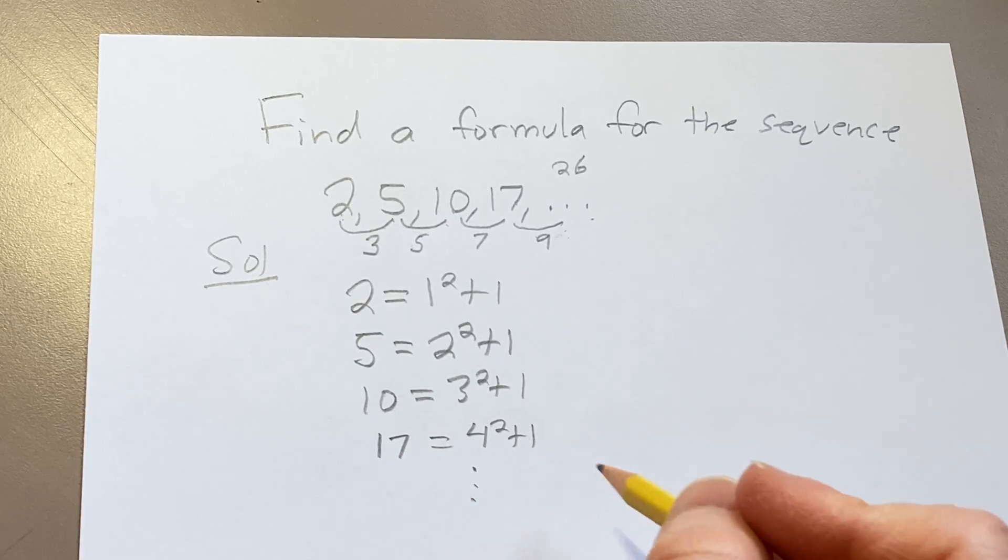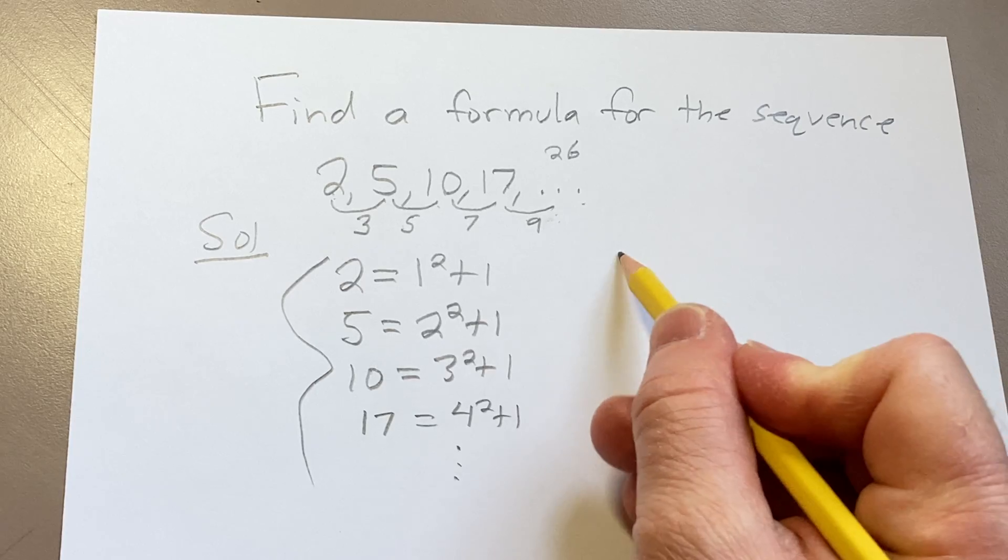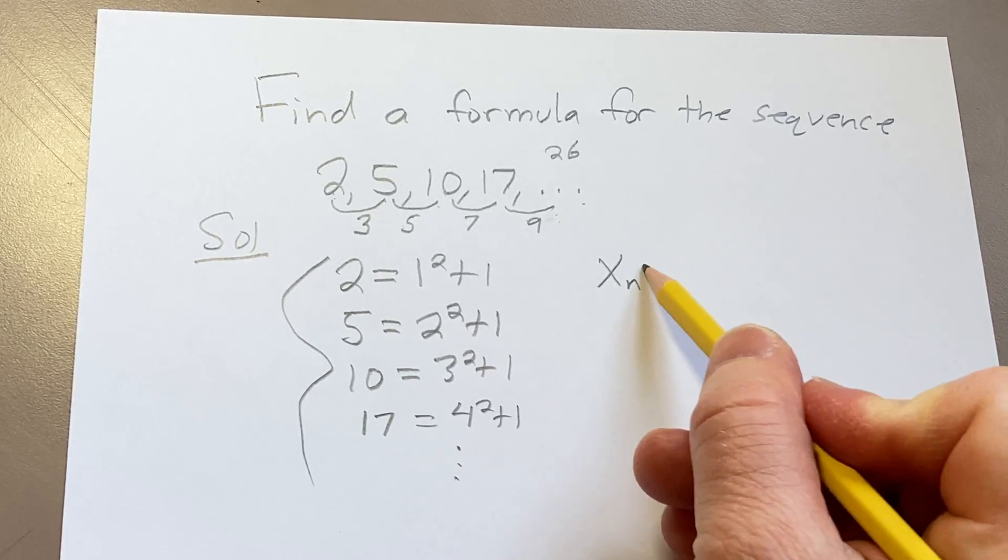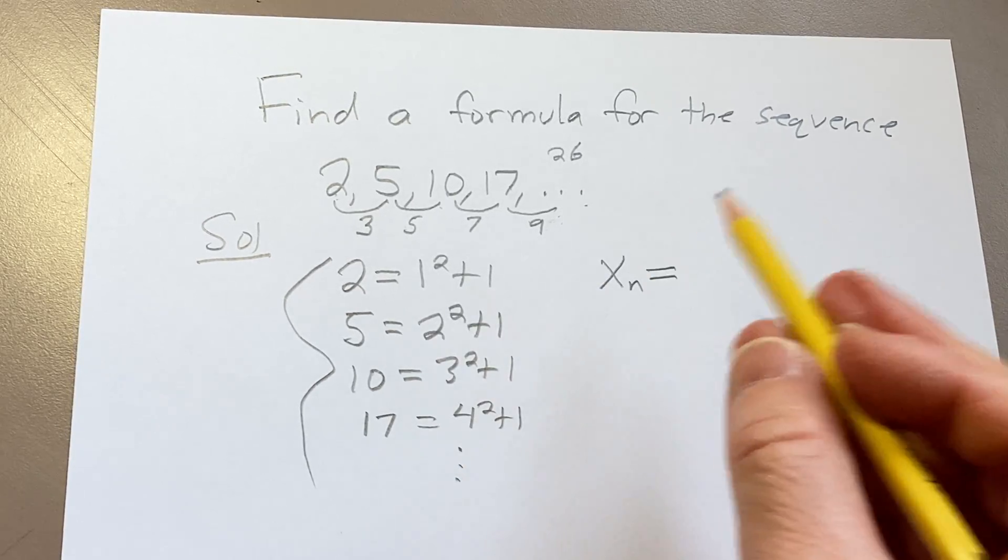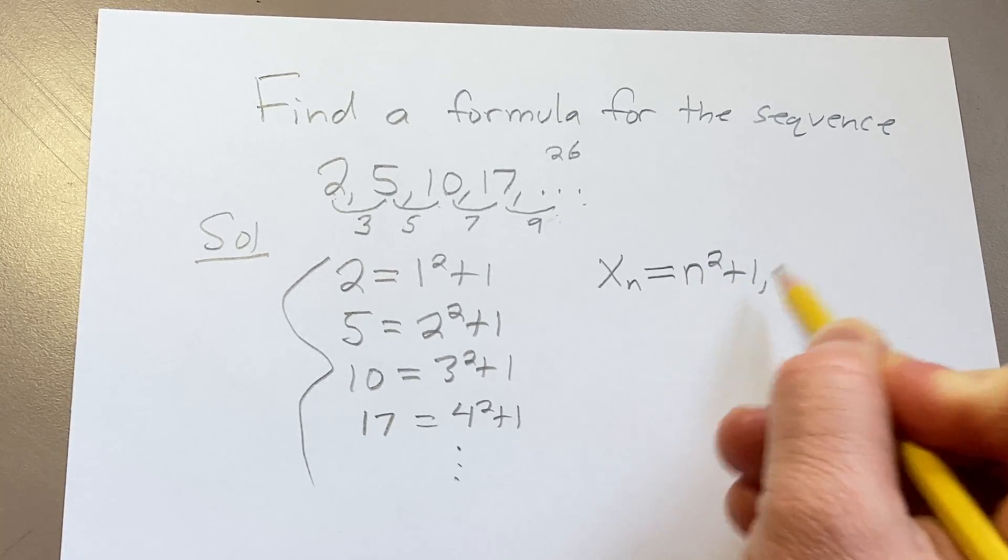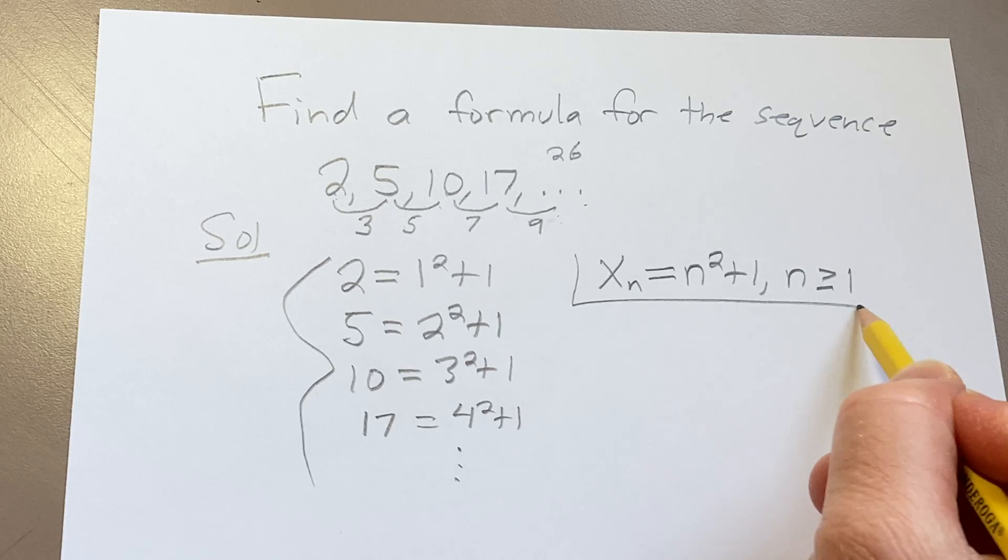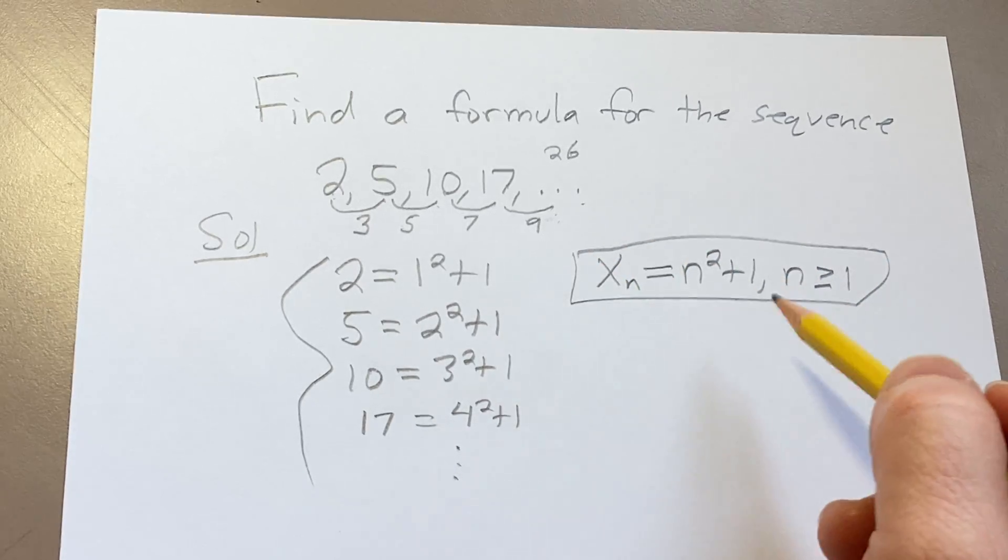Okay, so it just takes some thought to come up with that. And then if you let x sub n denote the nth term of the sequence, then you can see that the formula is going to be simply n squared plus 1. This is valid for n greater than or equal to 1. And so that would be the formula for this sequence.